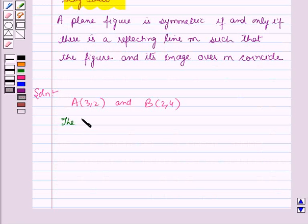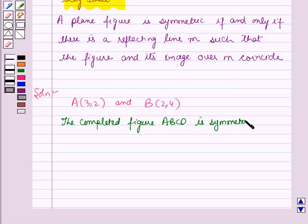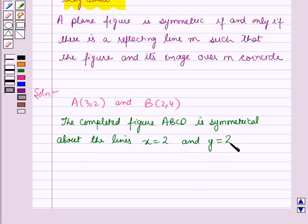Therefore, the completed figure ABCD is symmetrical about the lines x=2 and y=2.